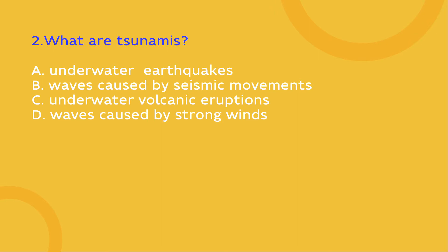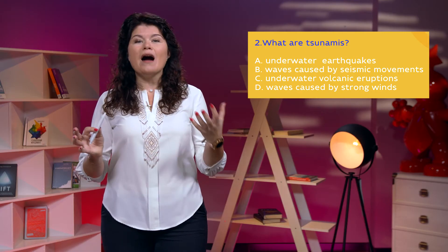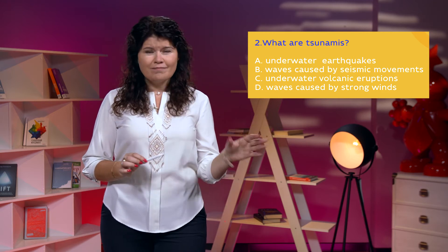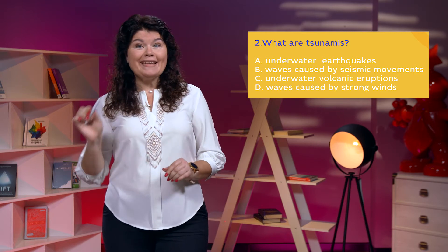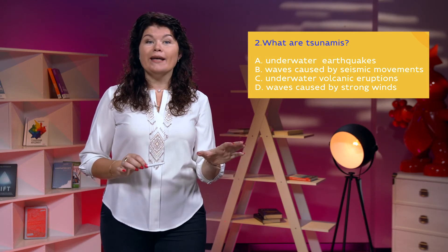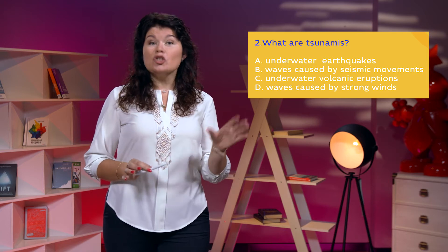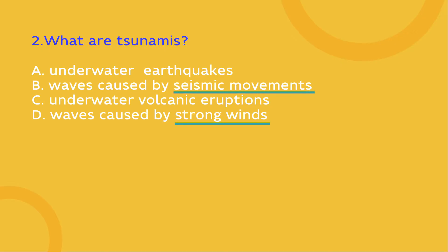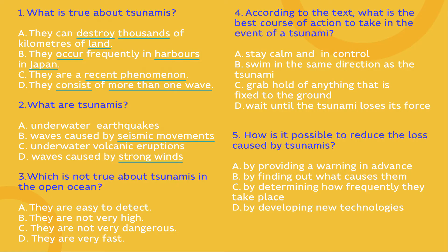Let's move on to the second question and find the answer to: what are tsunamis? Let's analyse the options. Options A and C both state that tsunamis are underwater earthquakes or volcanic eruptions — but tsunamis are earthquakes or eruptions? Options B and D state that tsunamis are waves caused by either seismic movements or strong winds. Let's underline these words not to forget them later. Analyze the other options on your own, underlining the meaningful words.